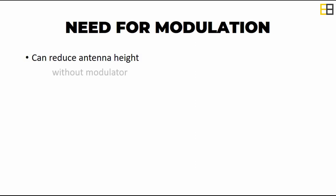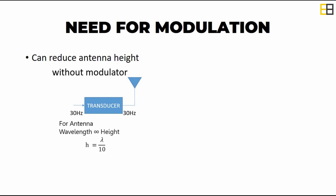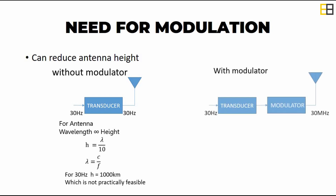Let us consider a transmitter without a modulator. When we transmit a 30 Hz signal, we'll need a 30 Hz antenna. For an antenna, the height is proportional to the wavelength. For a 30 Hz signal, we'll get the height around 1000 kilometers, which is practically not feasible. Now, if we use a modulator in the transmitter section, this 30 Hz signal can be energized to 30 MHz, and we can reduce the antenna height to 1 meter, which is practically possible.